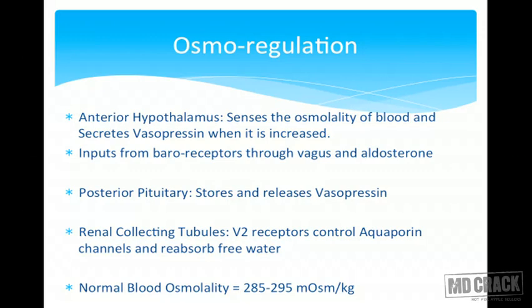Vasopressin, also called antidiuretic hormone, goes in circulation and reaches the V2 receptors of collecting tubule cells. It binds receptors, activates the cyclic AMP pathway, and makes aquaporin-2 channels available on the cell surface. These channels are responsible for absorption of free water, so water is reclaimed from collecting tubules using V2 receptor mediated aquaporin channels.